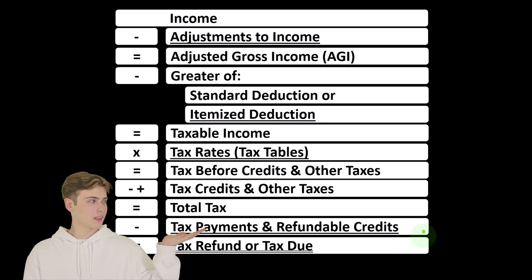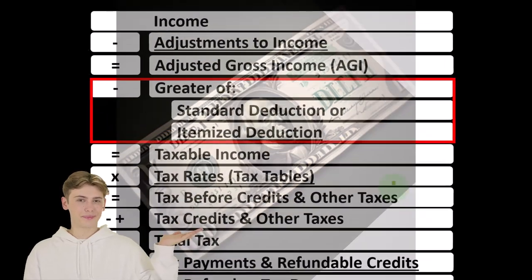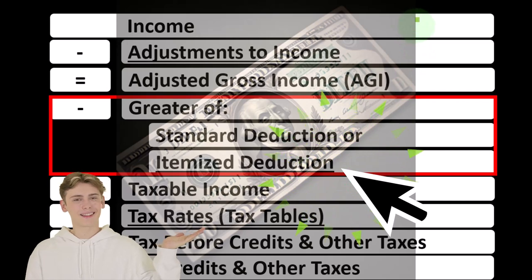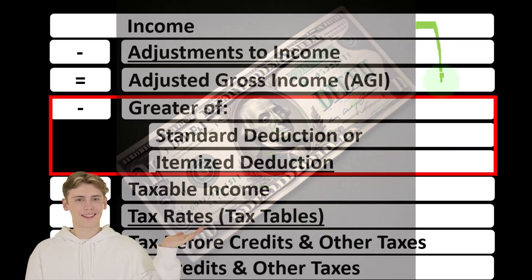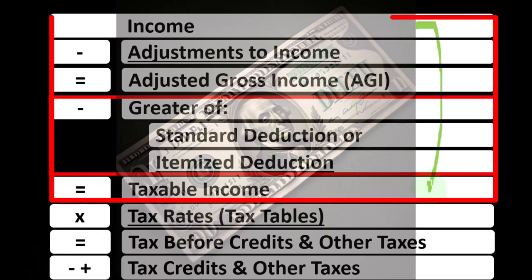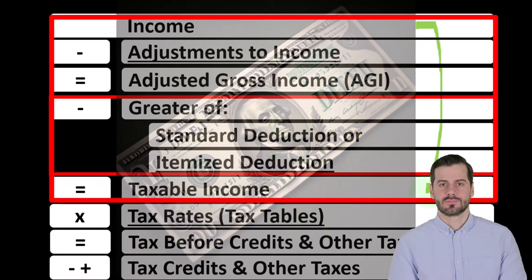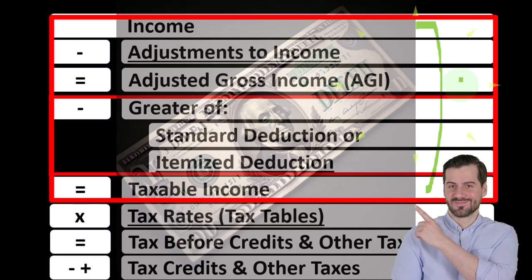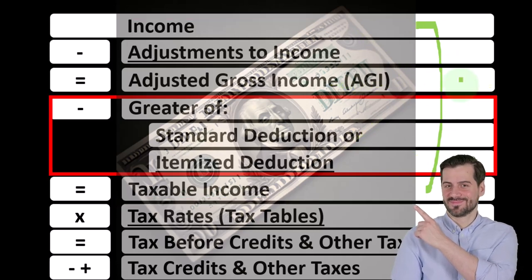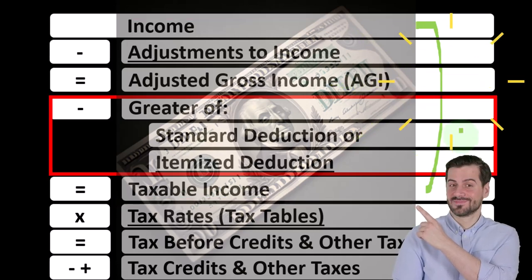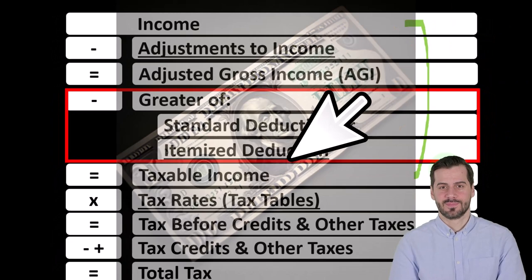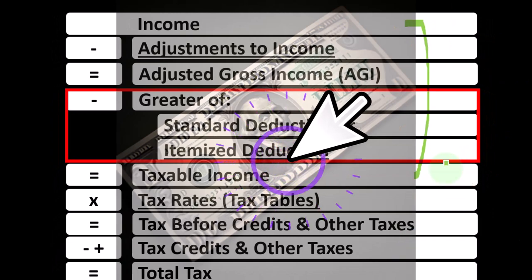When looking at the income tax formula, we're focused on the itemized deductions, remembering that the first half of the formula is in essence an income statement. We have income, the equivalent of expenses being the deductions, and the equivalent of net income being the taxable income.